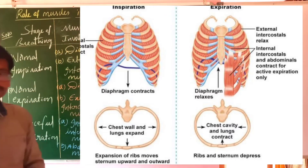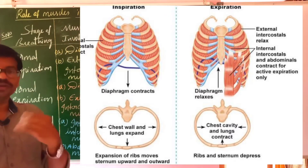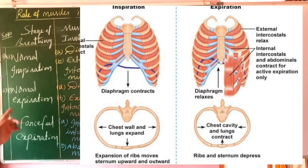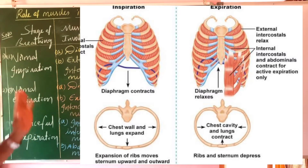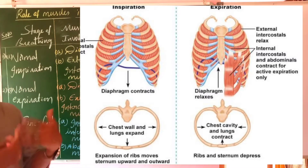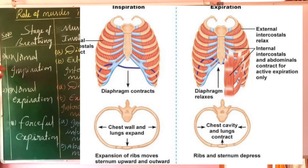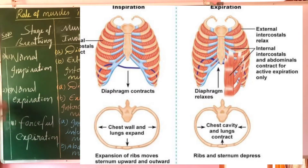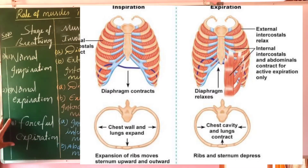That means during normal inspiration and normal expiration, as well as during forceful breathing, we have summarized all types of muscles. There are three stages we have taken: one is normal inspiration, second one is normal expiration, and third one is forceful expiration.